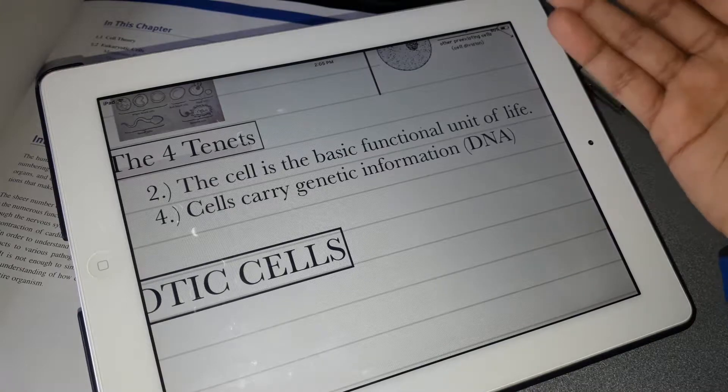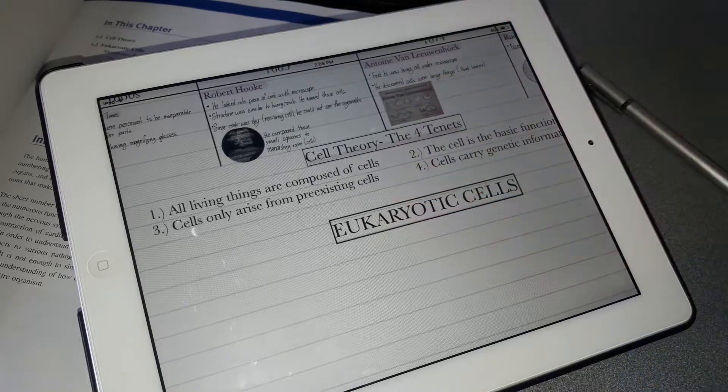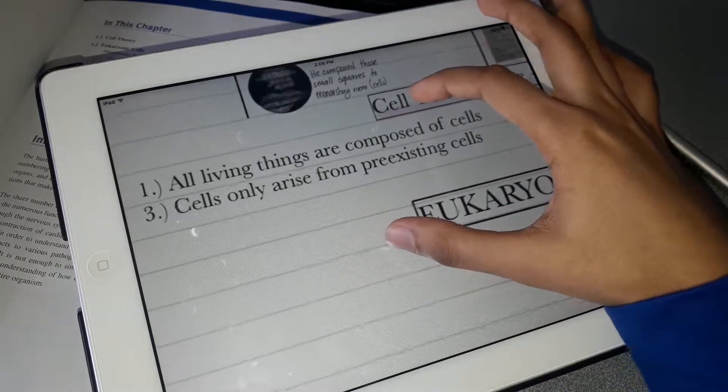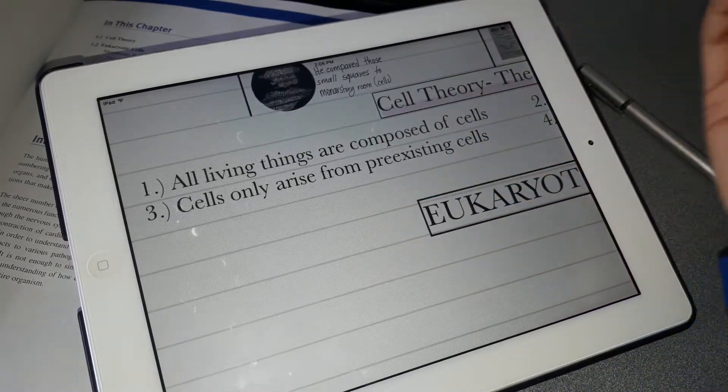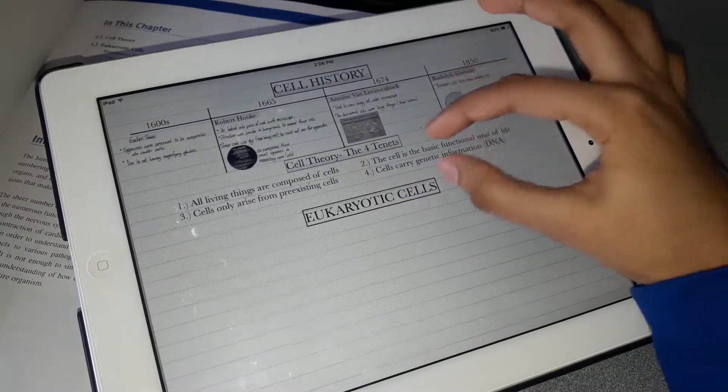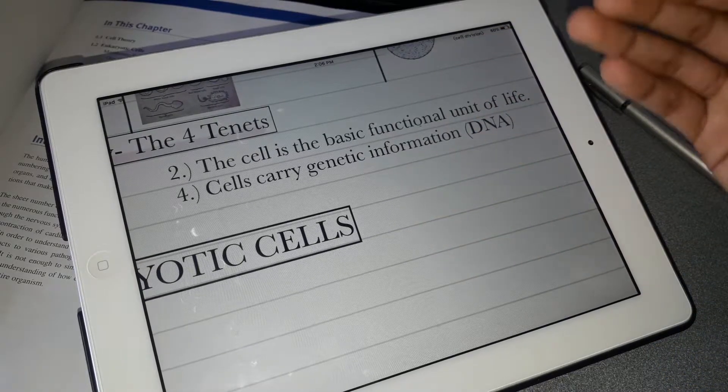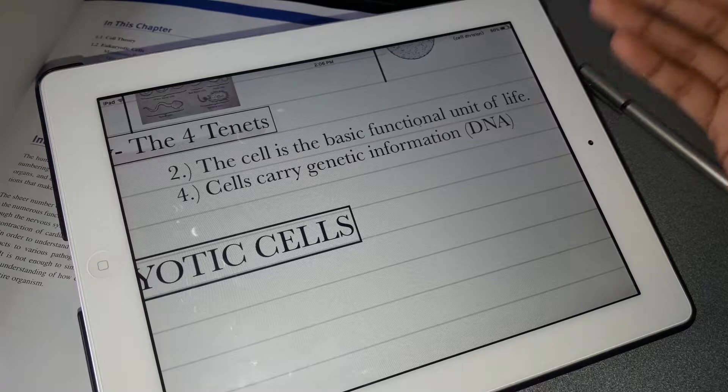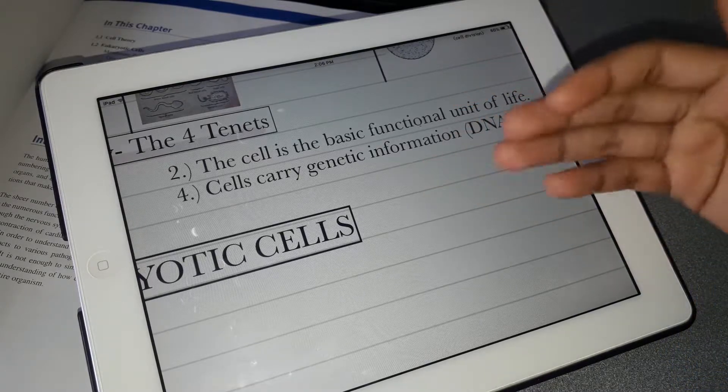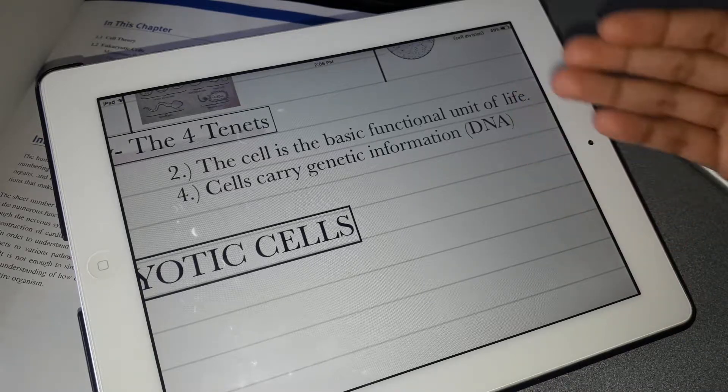You can actually combine theories one and two and consider that as one, in my opinion at least. Theory number three is that cells only arise from pre-existing cells, which was Rudolf Virchow's discovery. The fourth theory is that cells carry genetic information in their DNA - deoxyribonucleic acid - which we will learn in a later chapter.